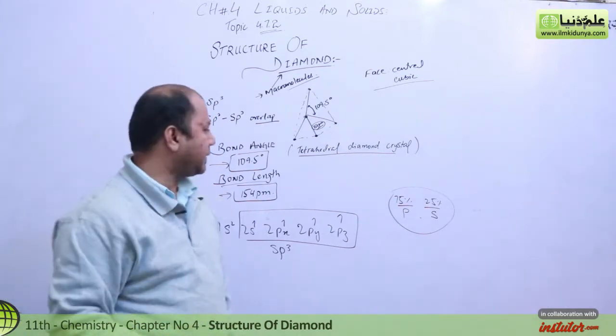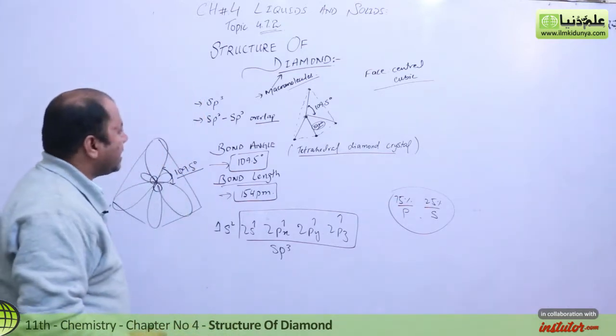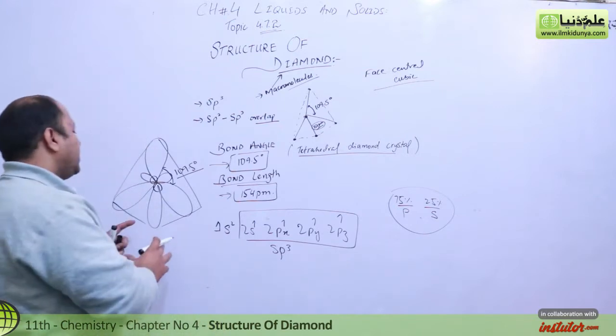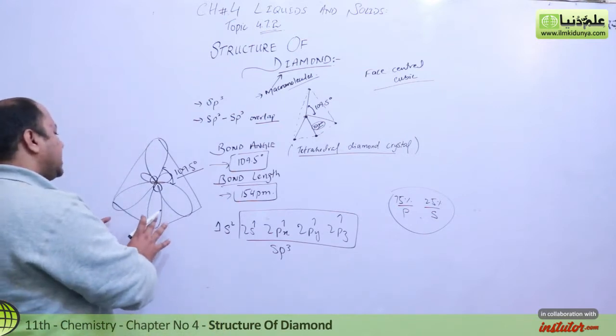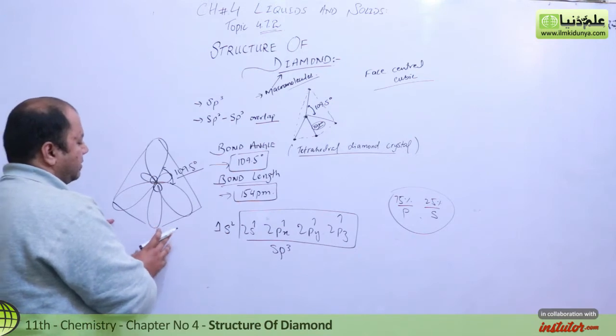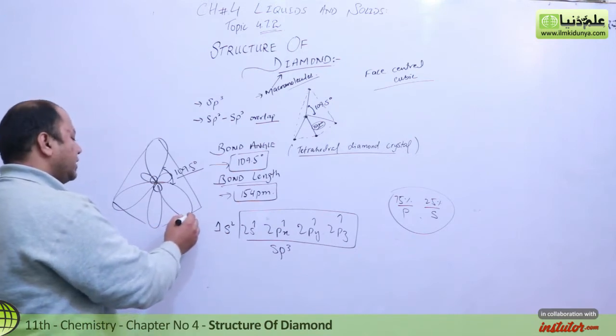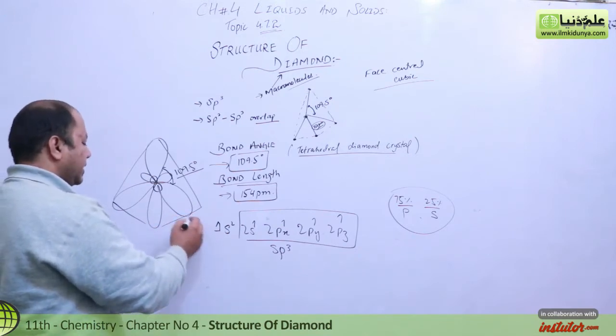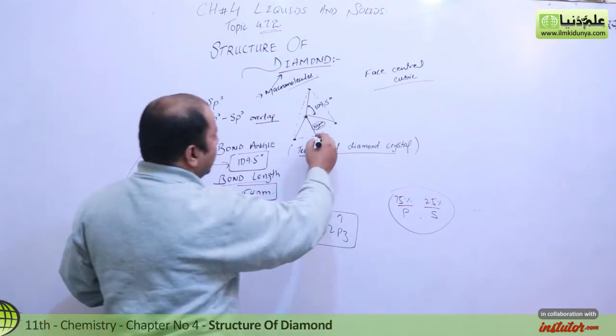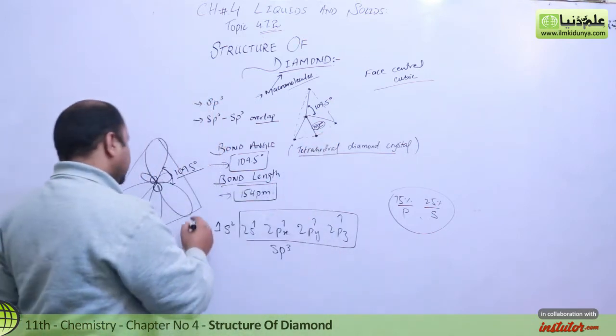These two things are very important. What I'm telling you is that one carbon is making the geometry, so another carbon will be attached in the same manner. You can sense it out like this.